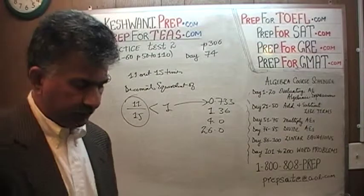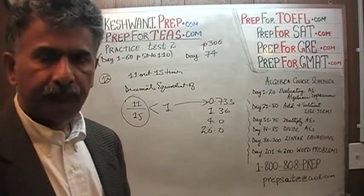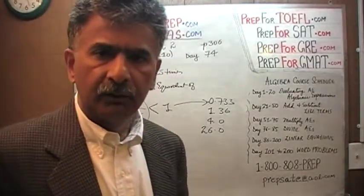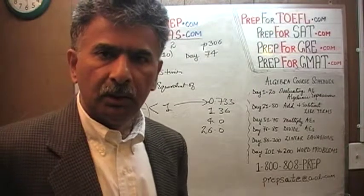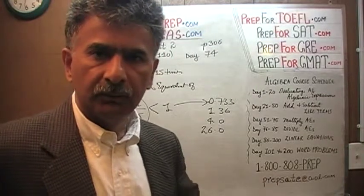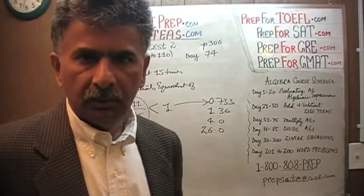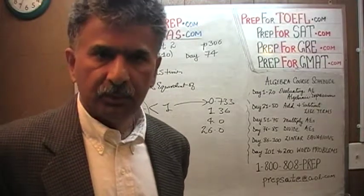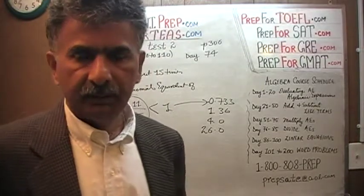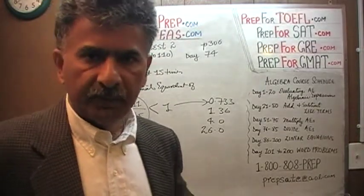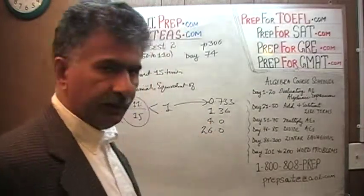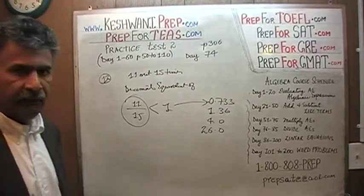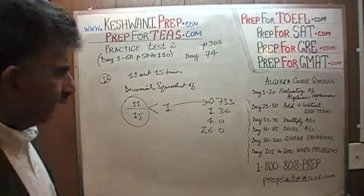Nobody's going to give you any extra credit if you sit there like a good schoolboy or schoolgirl and do all the work, because it's graded by computer. You get one point for getting the right answer — that's it. It doesn't matter how you got the answer. It's the only number among the four that is less than one.